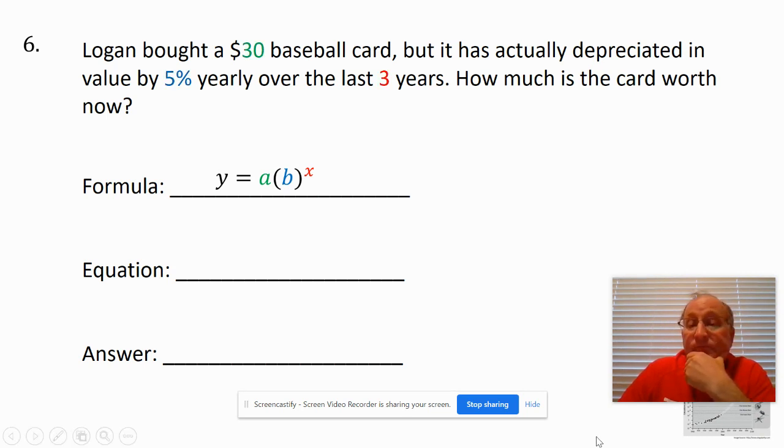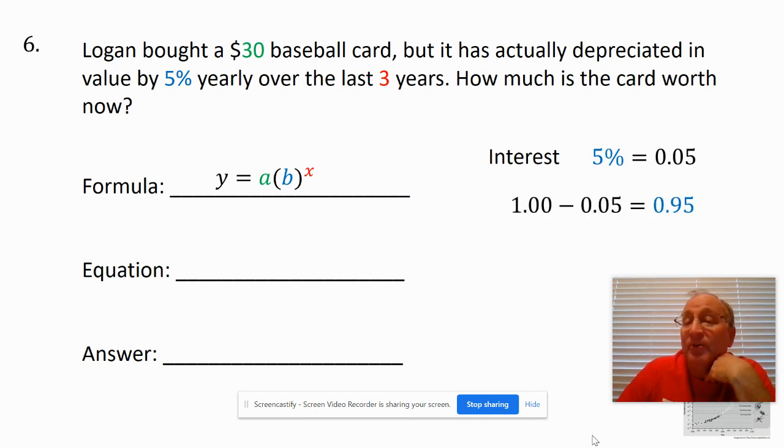One of the first things we need to find is our interest. It's a decay, so it's going to be 1 minus 0.05. 5% is 0.05, so my rate will be 0.95.